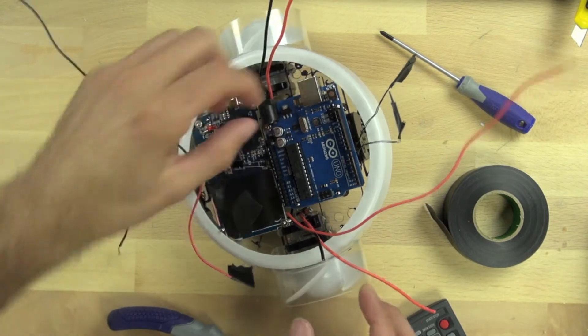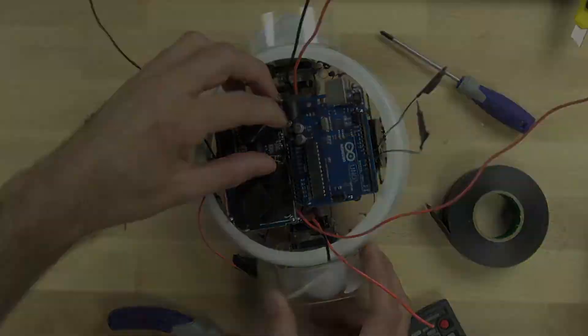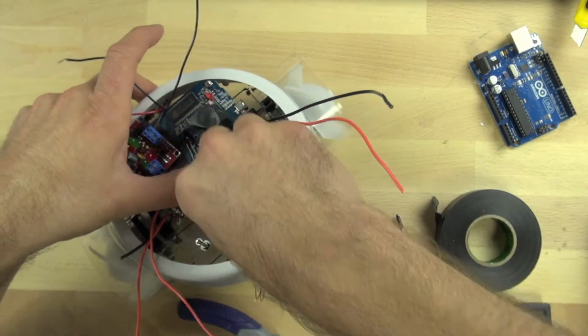We're going to remove the Arduino because it's kind of in the way. We need to route wires, and it's a lot easier to route those wires when it's not there.